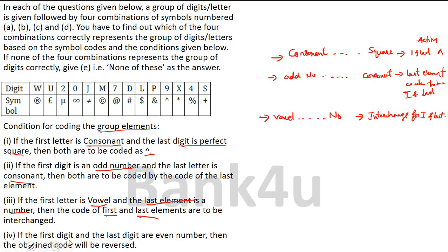Condition 4 — if the first digit and the last digit are both even numbers, then the obtained code will be reversed. That means whatever code comes, it has to be placed from the last — the first one comes at the last, the second one comes second from the last, and so on.